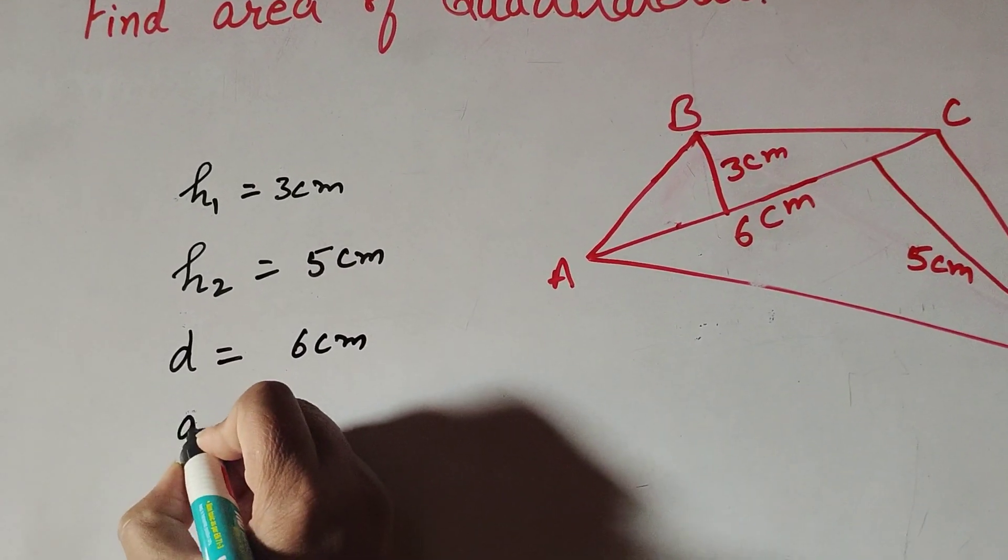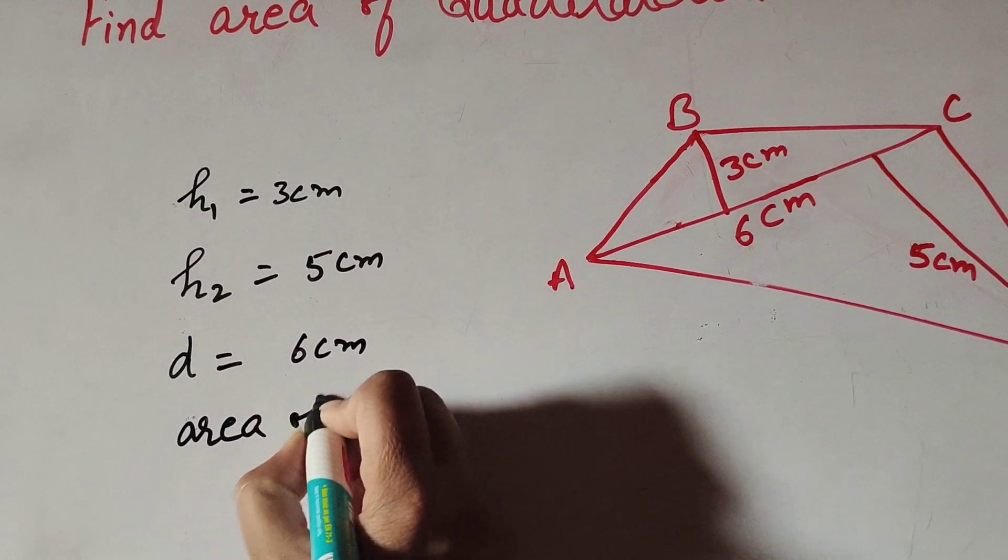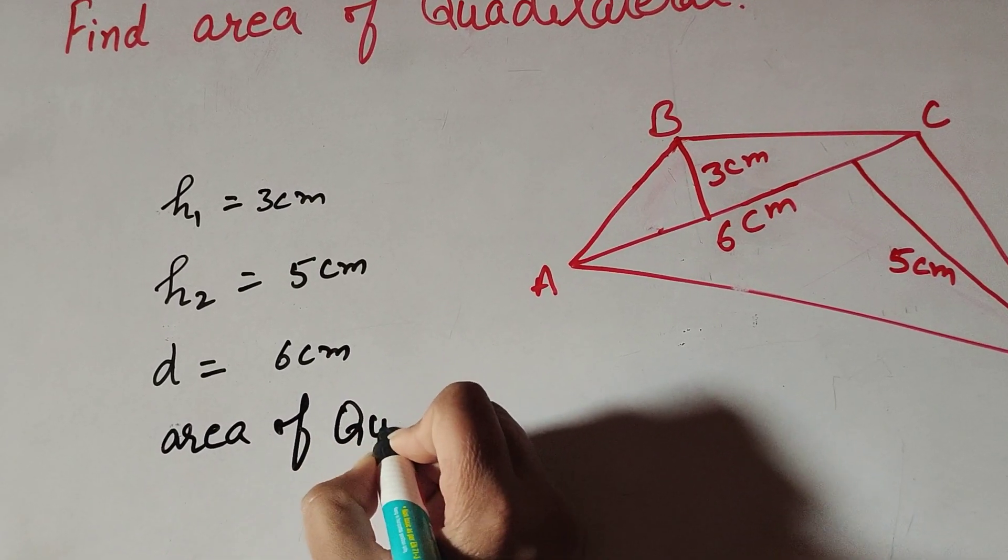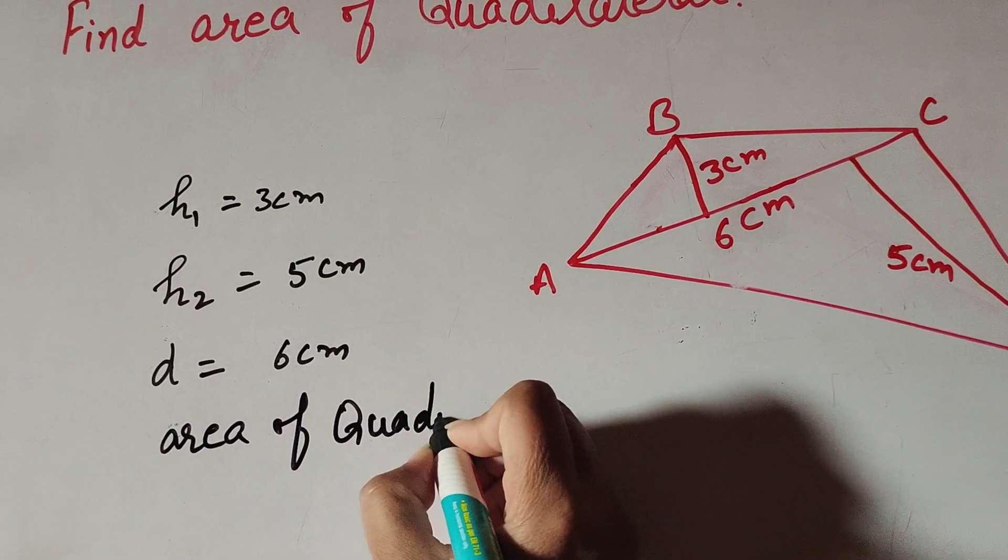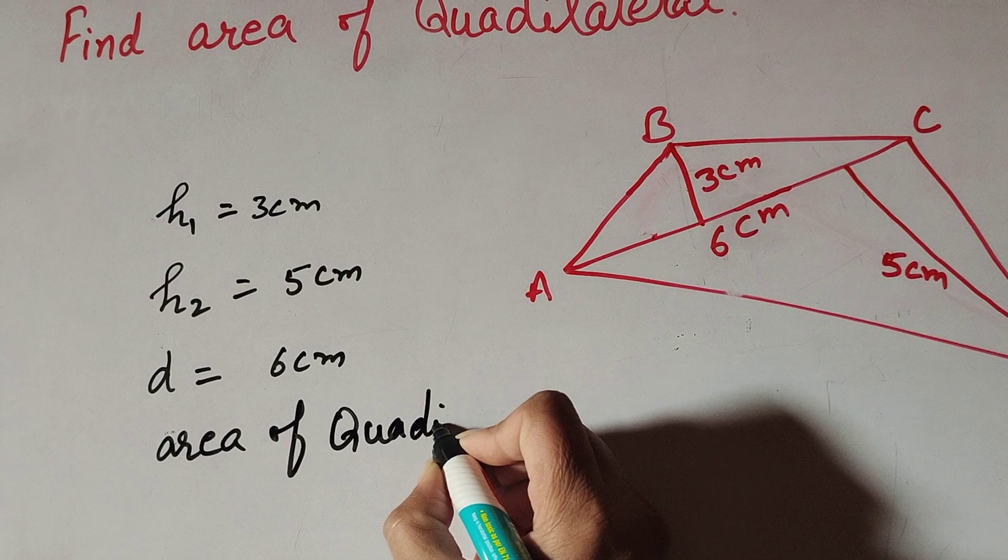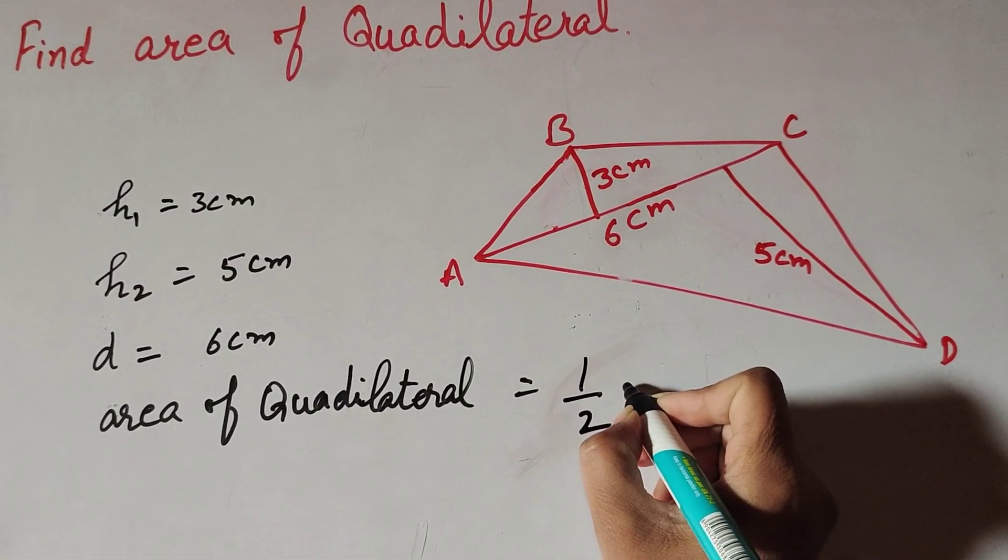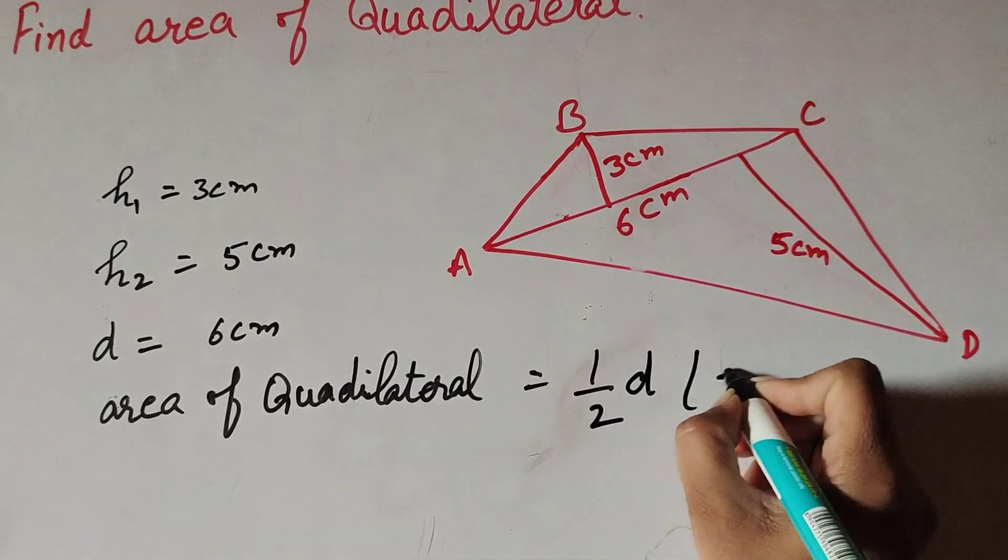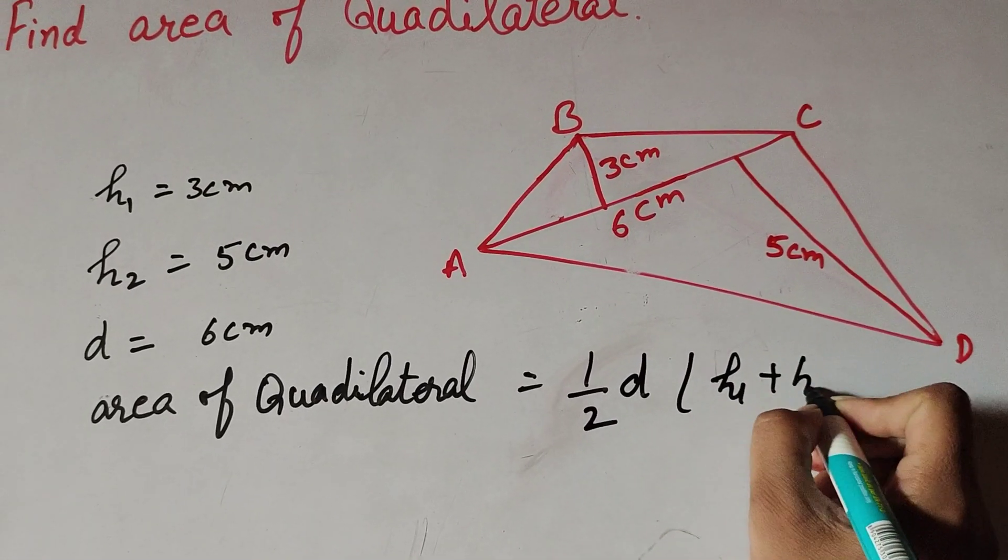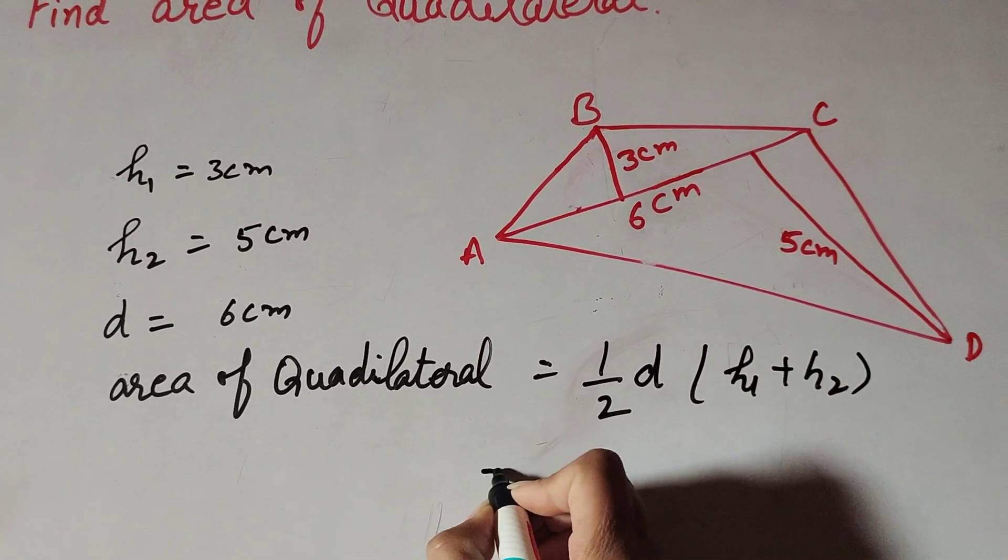We find the area of the quadrilateral. And we know the formula to find area of quadrilateral: it is equal to 1 over 2 times d times h1 plus h2. It is equal to 1 over 2.